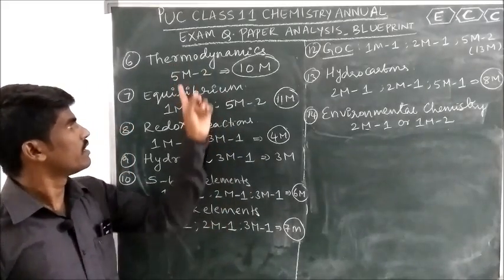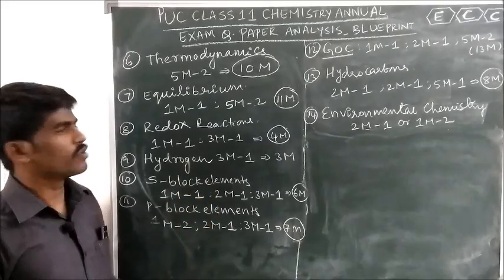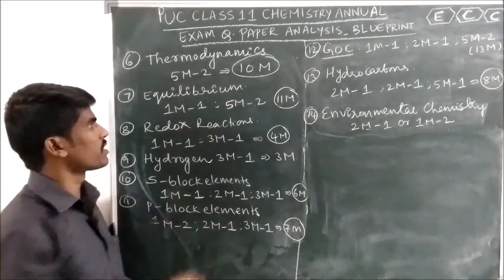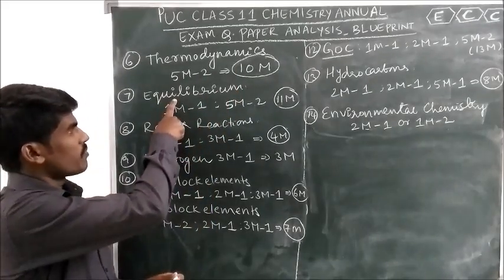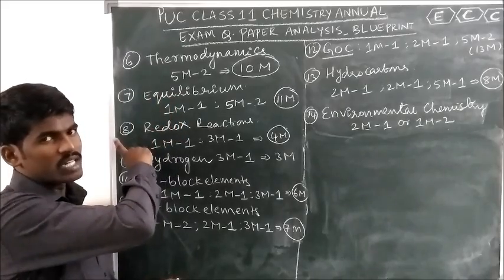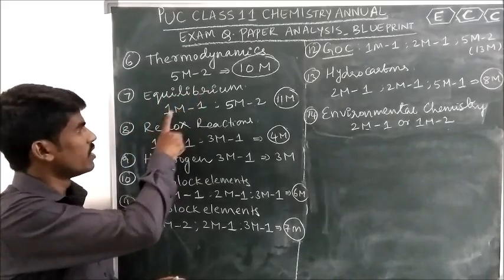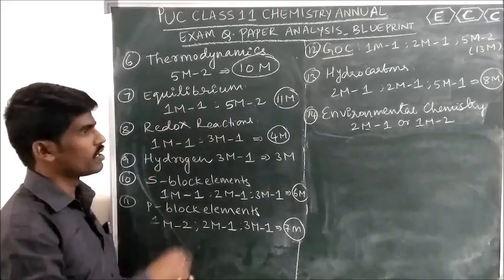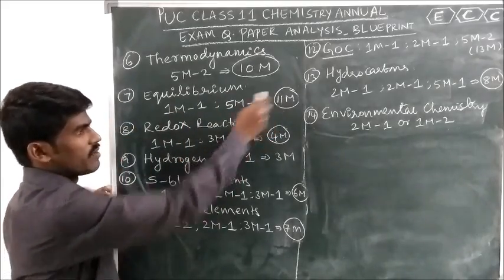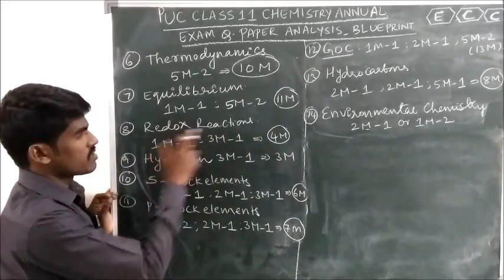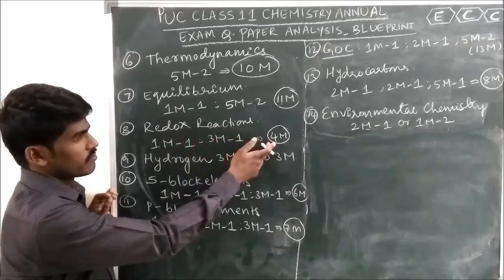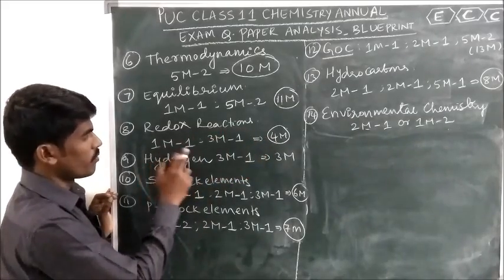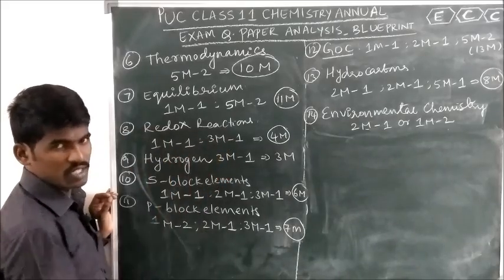From the Thermodynamics chapter, you will get 2 five-mark questions. Total weightage is 10 marks. From the Equilibrium chapter — which covers both chemical equilibrium and ionic equilibrium — you will get 1 one-mark question and 2 five-mark questions. Total weightage is 11 marks. Redox Reactions gives 4 marks total: 1 one-mark question and 1 three-mark question.